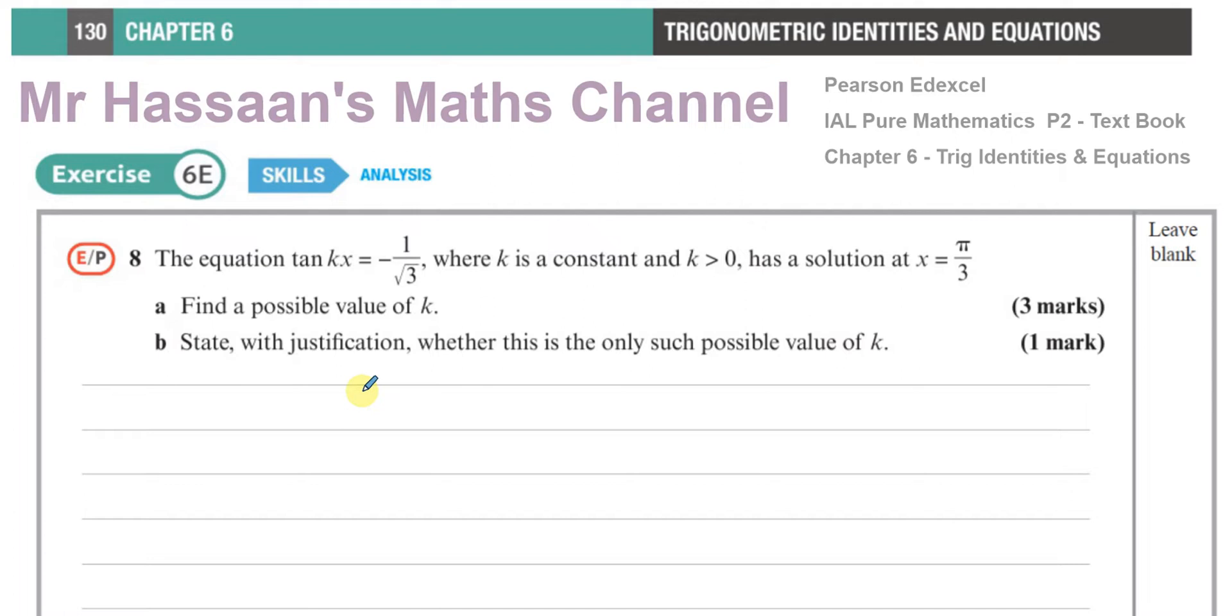The question tells us that the equation tan(kx) equals negative 1 over root 3, where k is a constant and k is greater than 0, has a solution at x equals π over 3. Find a possible value of k.